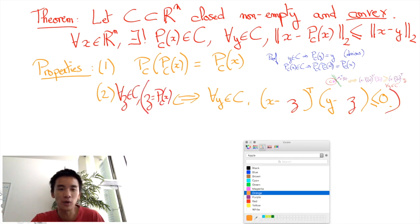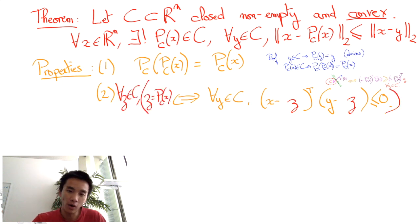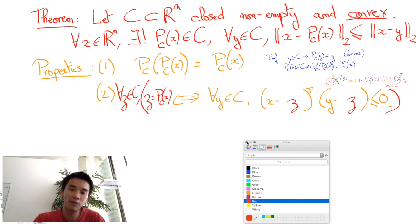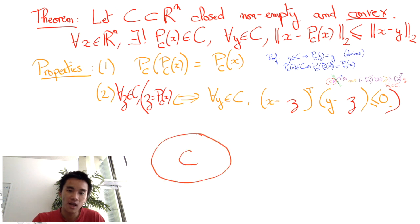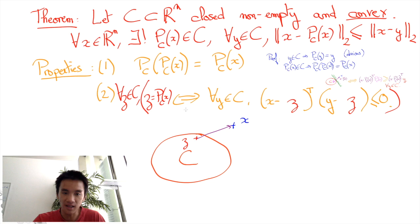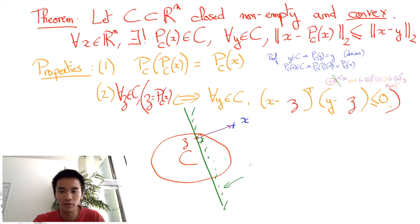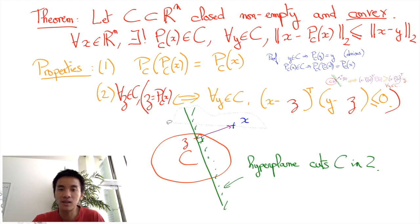This is easy to see on a figure. For any other point of the convex set, the hyperplane orthogonal to the line between the point and X, and that goes through the point of the convex set, necessarily cuts the convex set in two.